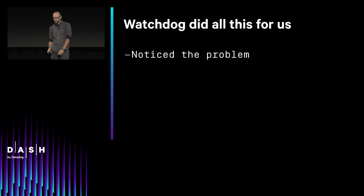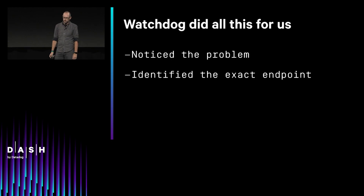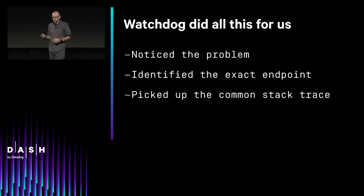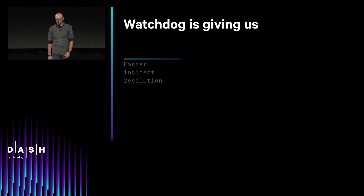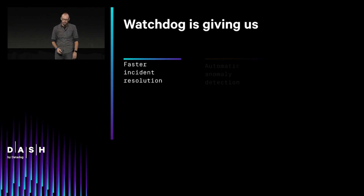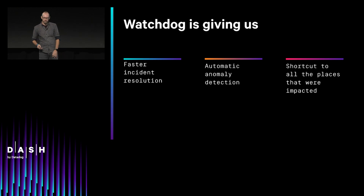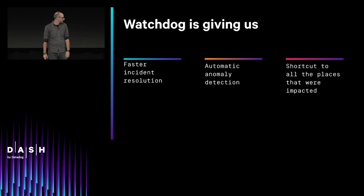Pretty cool. Watchdog noticed that there was a problem, identified exactly where the problem was with the endpoint, and picked up the common stack trace, allowing us to know why it was broken and fix it quickly. Basically, Watchdog is giving us faster incident response. It's showing us where the problems are in our system that we wouldn't have otherwise seen, and where other impacts are throughout the system. Overall, it's allowing us to essentially deliver a better level of service to our customers.